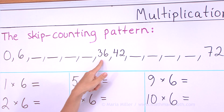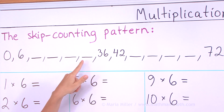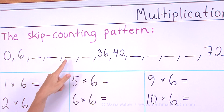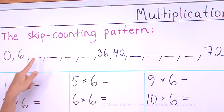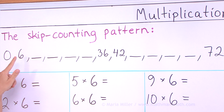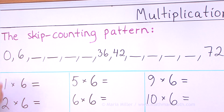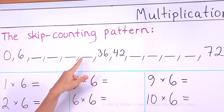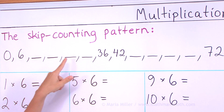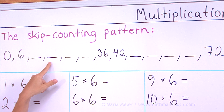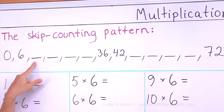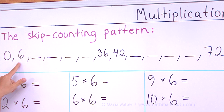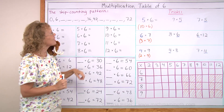And now backwards: 36, 30, 24, 18, 12, 6, and 0. Now it's your turn from 36 ... 6, and 0.